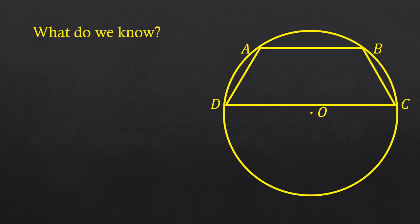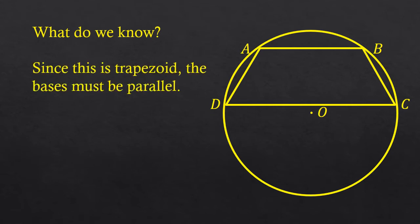So what do we know about this picture? We're given that it's a trapezoid, and since it is a trapezoid, the bases must be parallel — that's part of the definition of a trapezoid. That means that in this picture, AB is parallel to DC.